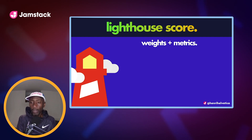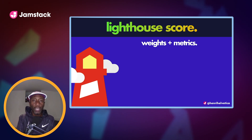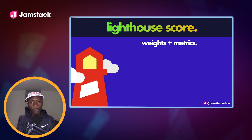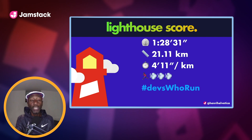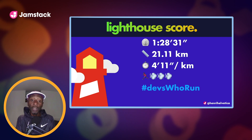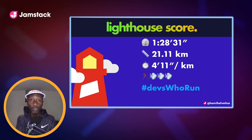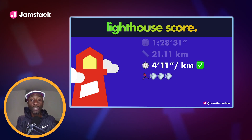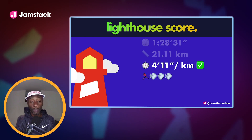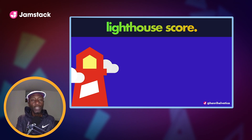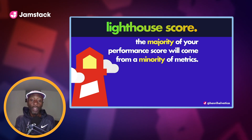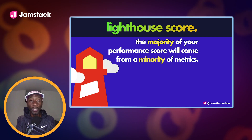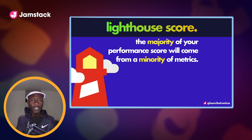The Lighthouse score is calculated by way of metrics. Metrics are measurements, but the Lighthouse score is governed by weights and measures — the metrics are weighted differently, so some are going to be more important than others. As a runner, earlier this year I did a 21K run at 4:11 pace. Once upon a time, distance may have been my priority metric, but today I'm all about pace. With Lighthouse it's pretty much the same — the majority of your performance score will come from a minority of metrics. It's kind of like losing the popular vote and somehow still becoming president.